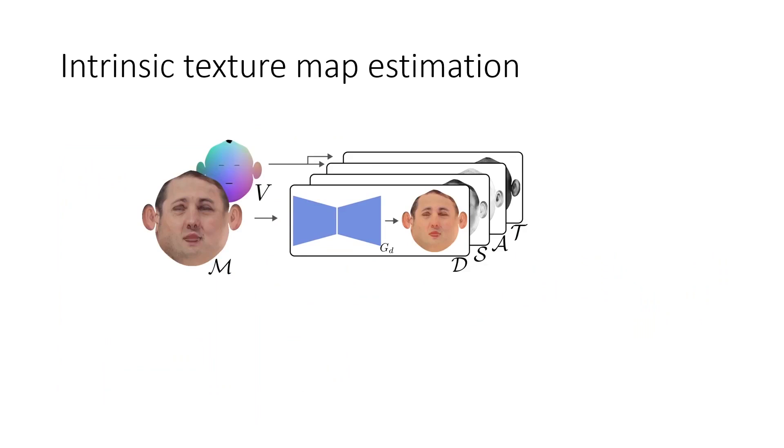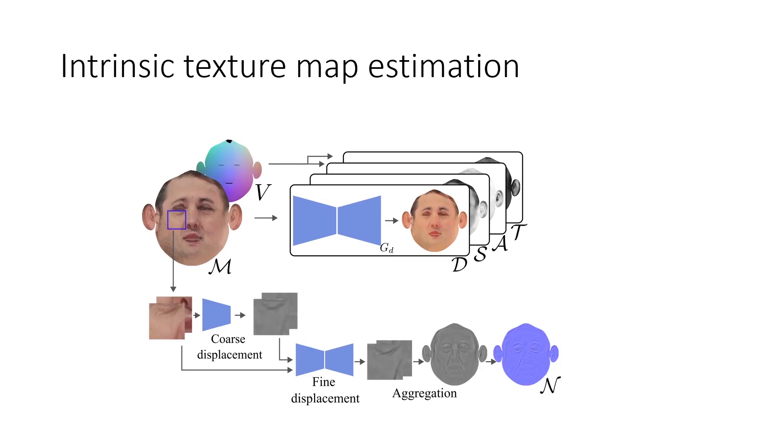We use the normalized texture M to estimate intrinsic face parameters. We use image-to-image translation networks to generate the texture maps for diffuse, specular, ambient occlusion, and translucency. We use a two-stage process to estimate a fine-grained displacement map, then convert it to a normal map.